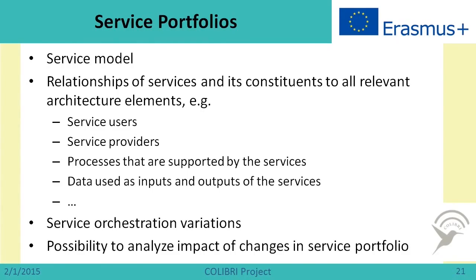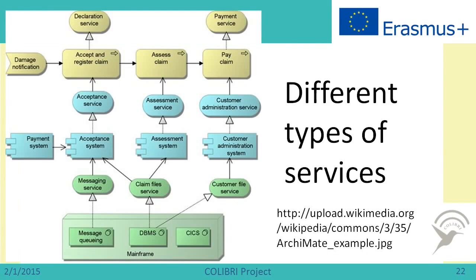Now, service portfolios. When we think about service portfolios, we can think of a service model that can be represented by enterprise architecture, and think about relationships of services and their constituents to all other enterprise architecture elements, such as service users, service providers, and processes that are supported by services, as well as data used as inputs and outputs. We can also think of service orchestration variations and analyze the impact of changes in service portfolios. There are different types of services: business services provided by specific business processes, application services provided by applications, and technology or infrastructure services provided by specific devices and operating systems.